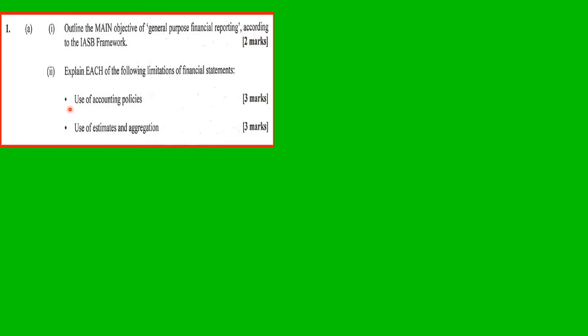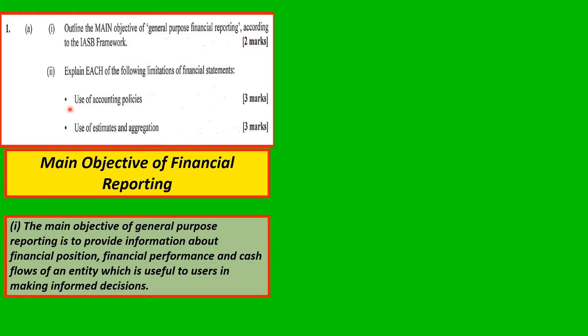Part A: Outline the main objective of general purpose financial reporting according to the IASB framework. The main objective of general purpose reporting is to provide information about financial position, financial performance, and cash flows of an entity, which is useful to users in making informed decisions. Part Two: Explain each of the following limitations of financial statements.